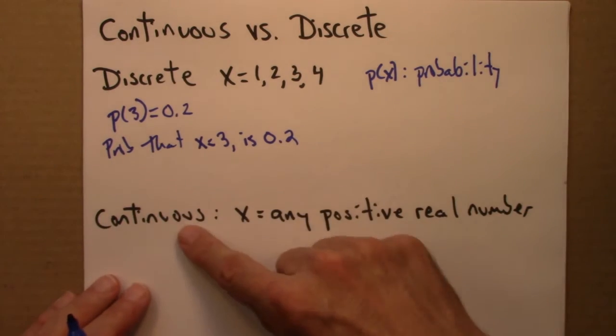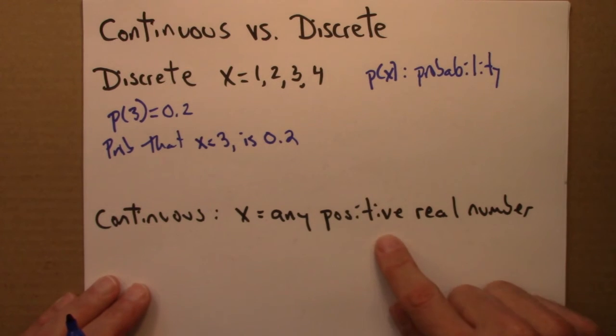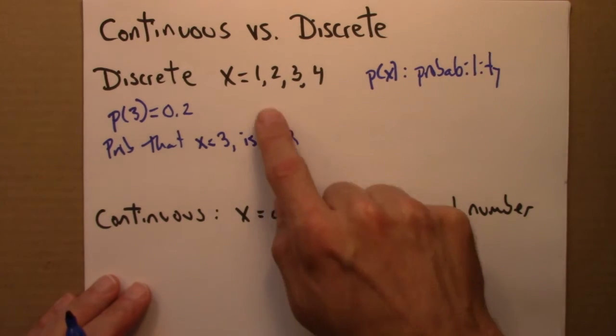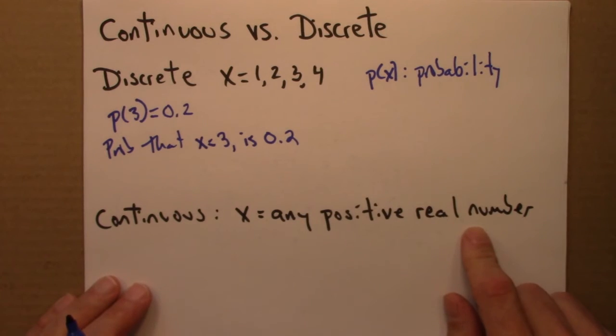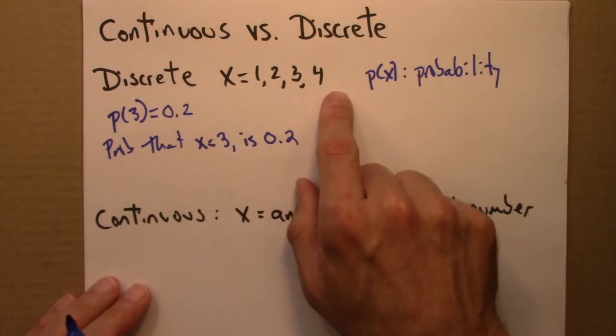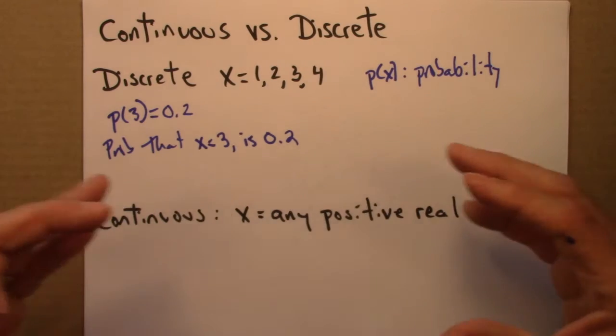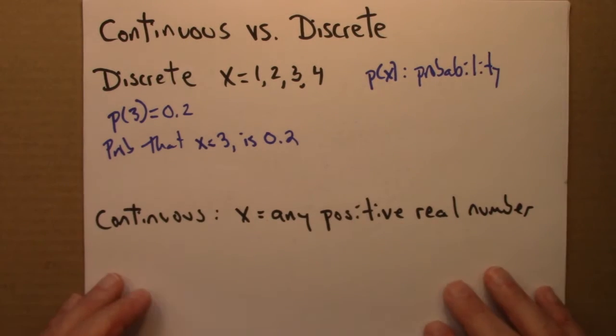So for continuous situations, for example, suppose x isn't just 1, 2, 3, or 4, but could be any positive real number, or any number between 1 and 4. So along a continuum, there's no gaps, there's no numbers missing.